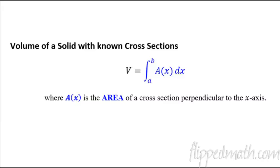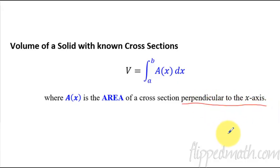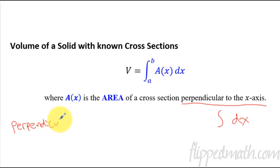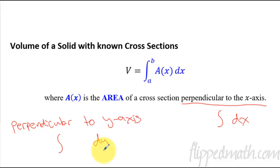That's where this formula comes in. We're going to integrate from the starting point A to B of our bounded region, taking the area of the cross-section. The A(x) represents the area of a cross-section perpendicular to the x-axis. The phrase 'perpendicular to the x-axis' tells you that you're taking an integral with respect to x. You might also note that if the problem says 'perpendicular to the y-axis,' that means you are taking an integral with respect to y.